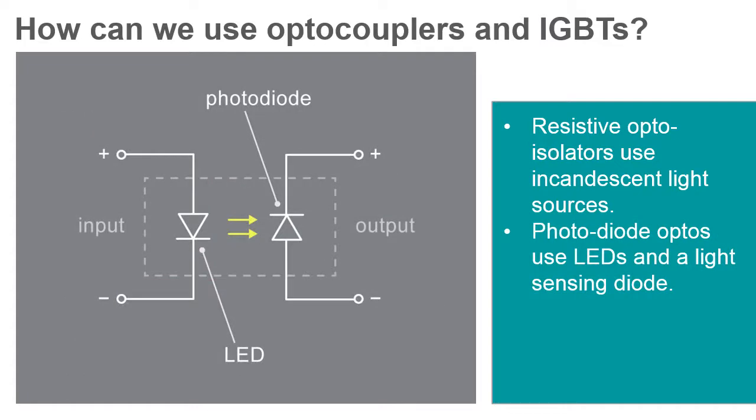Photodiode optoisolators use LEDs as light sources and silicon photodiodes as sensors. Although this type of optocoupler does not have the same linearity properties as the resistive type, it is much faster. The fastest type of optocoupler uses pin diodes to handle transfer rates up to 50 million pulses per second. Photodiode optoisolators can be used for interfacing analog signals.